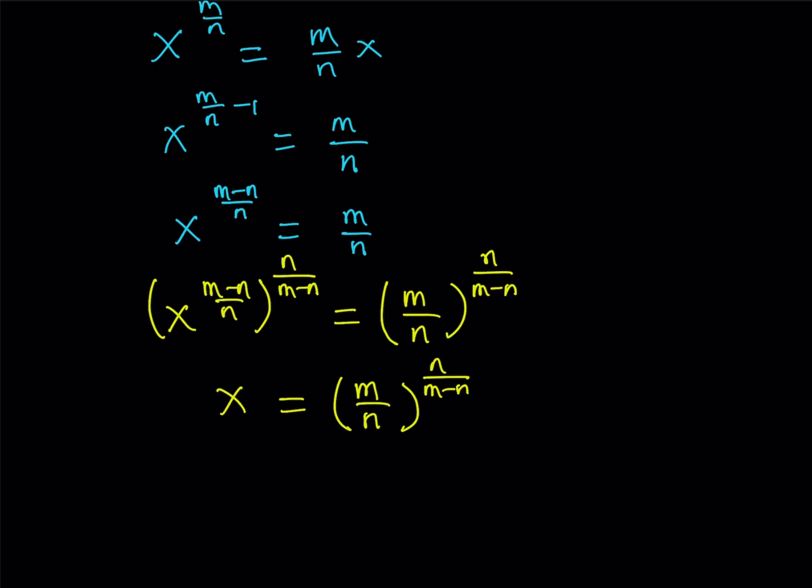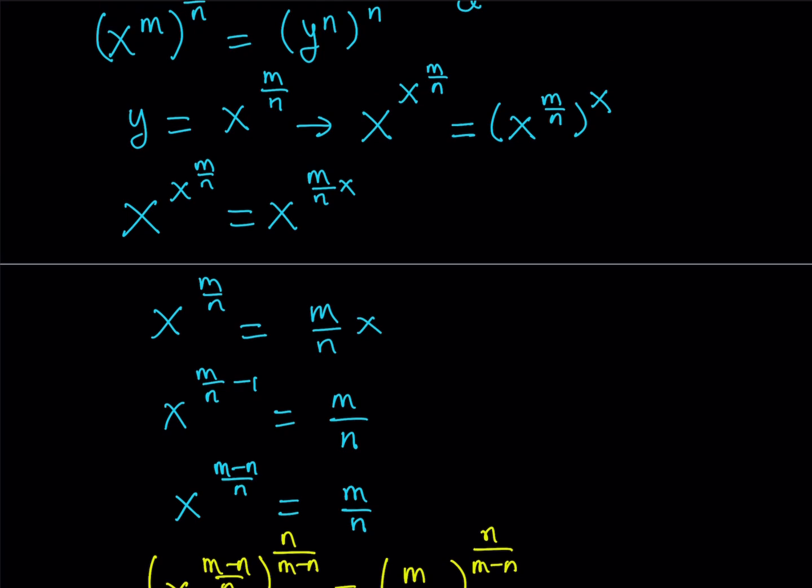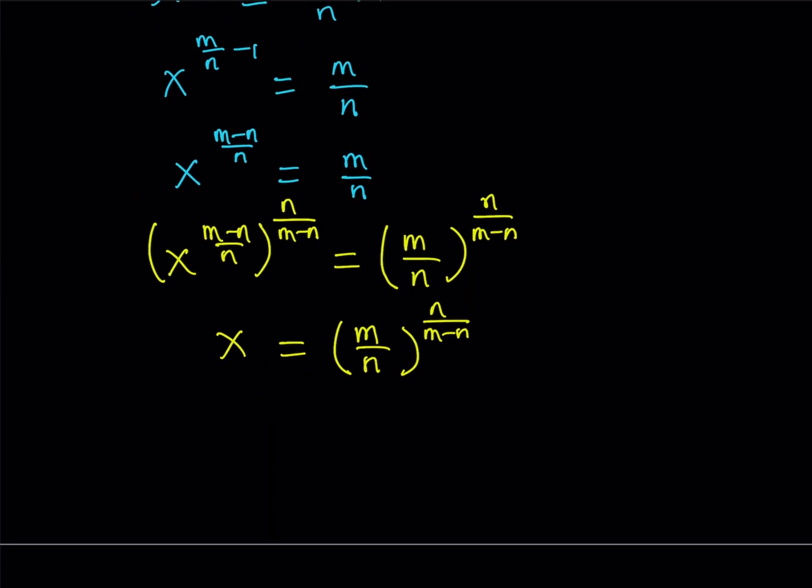But I also want to solve for the y value. How do I do that? Well, we do know that y and x are related, right? By using this expression, I can basically relate x and y. So I can write y as x to the power m over n. And if I go ahead and substitute that here, how am I going to use that? Well, since I already have x, I can just write y as x to the power that.